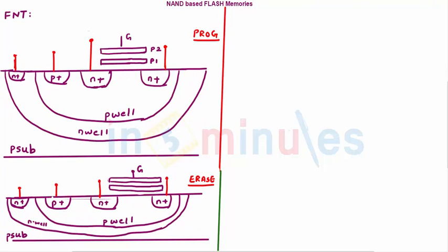Let's revisit Fowler-Nordheim tunneling. When we wanted to erase something using Fowler-Nordheim tunneling, we gave a very high voltage at the drain and zero voltage at the gate. Whereas when we wanted to program something, we gave a very high voltage at the gate and low or zero voltage at the drain, so that the charge can be trapped and the threshold voltage can be increased. There was also a thin oxide compared to hot electron effect, which led to the tunneling of electrons.